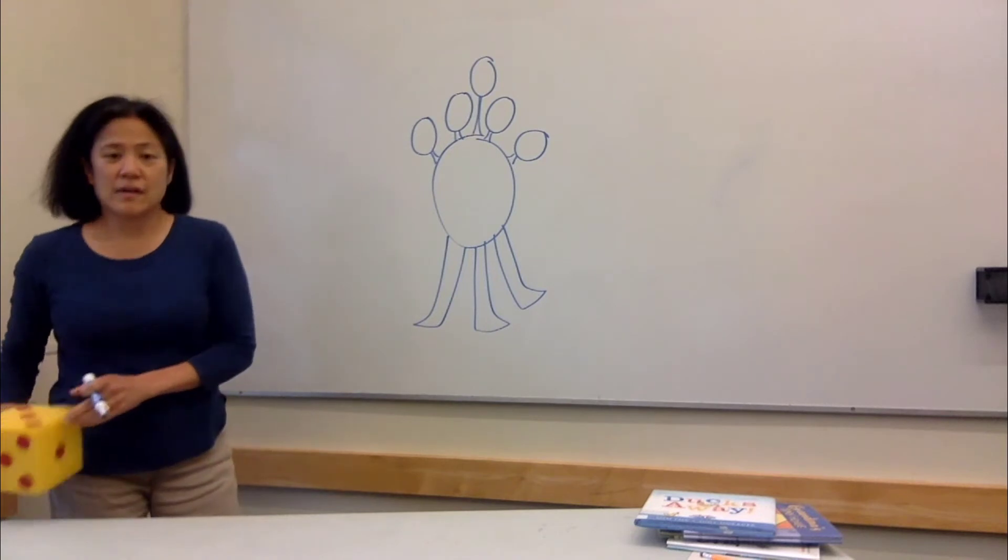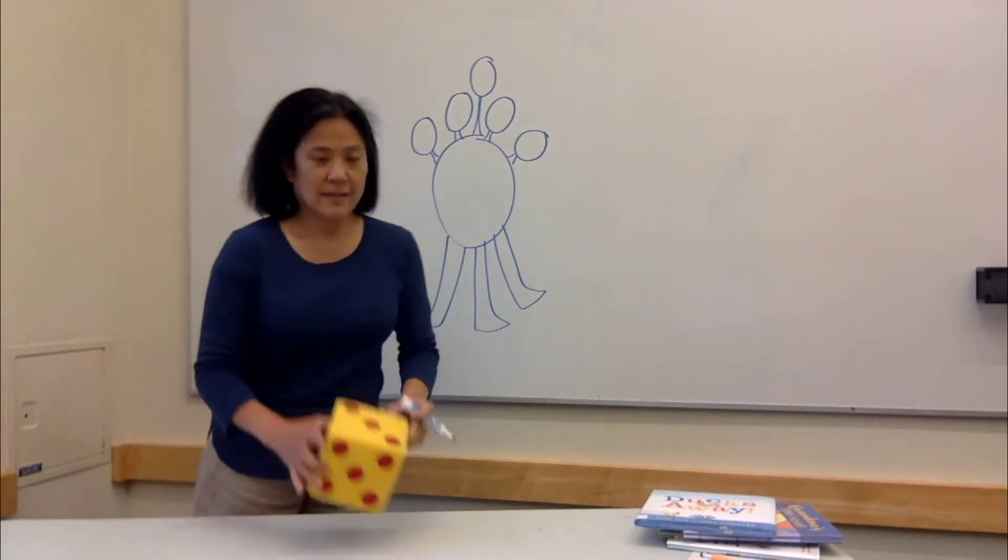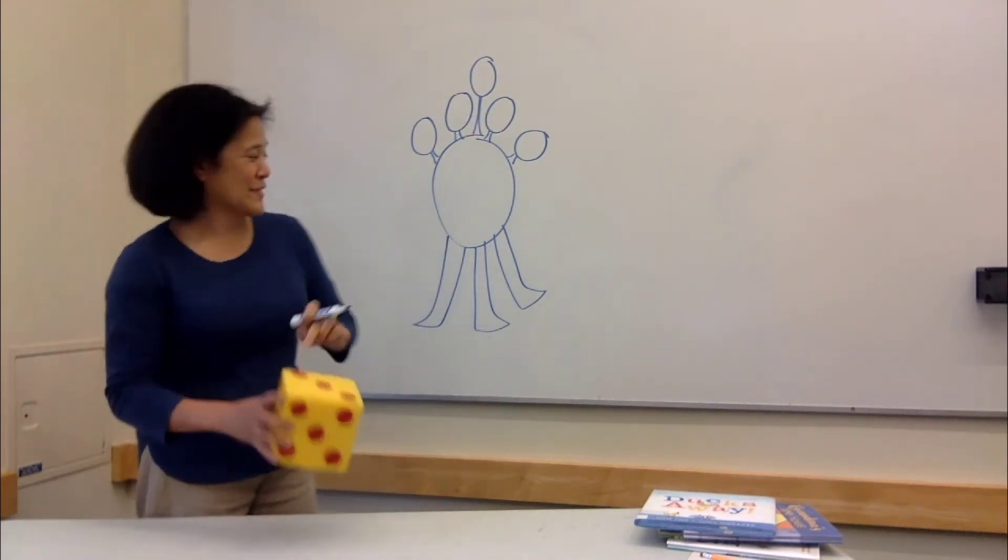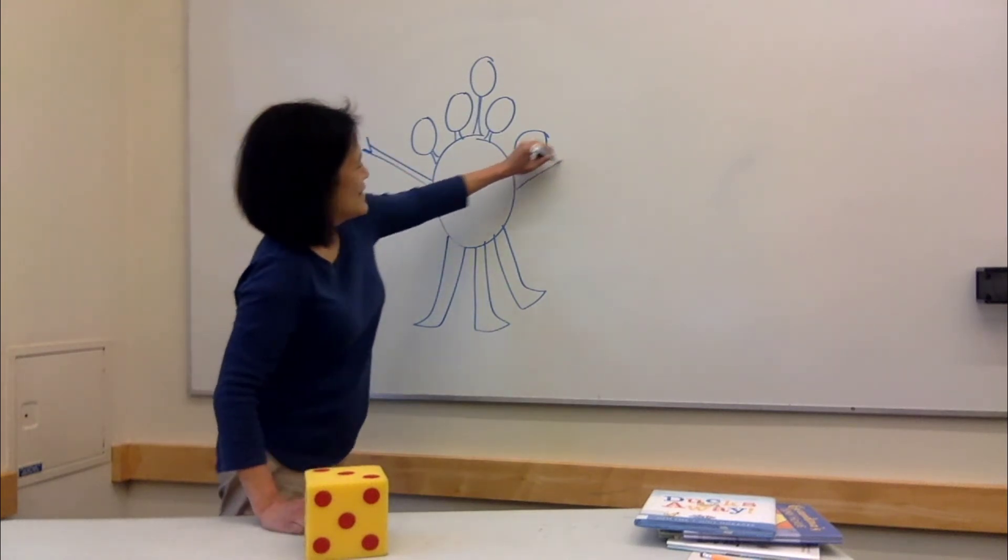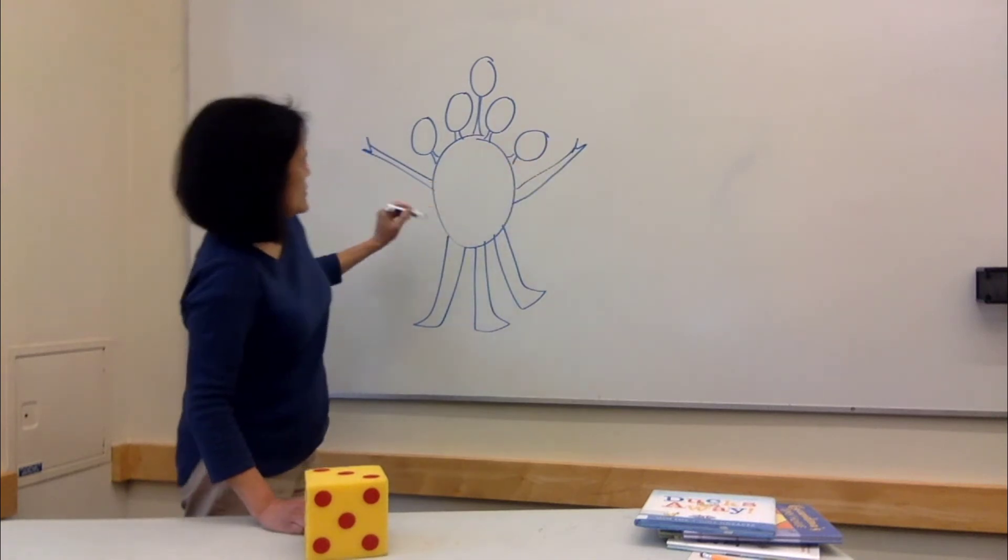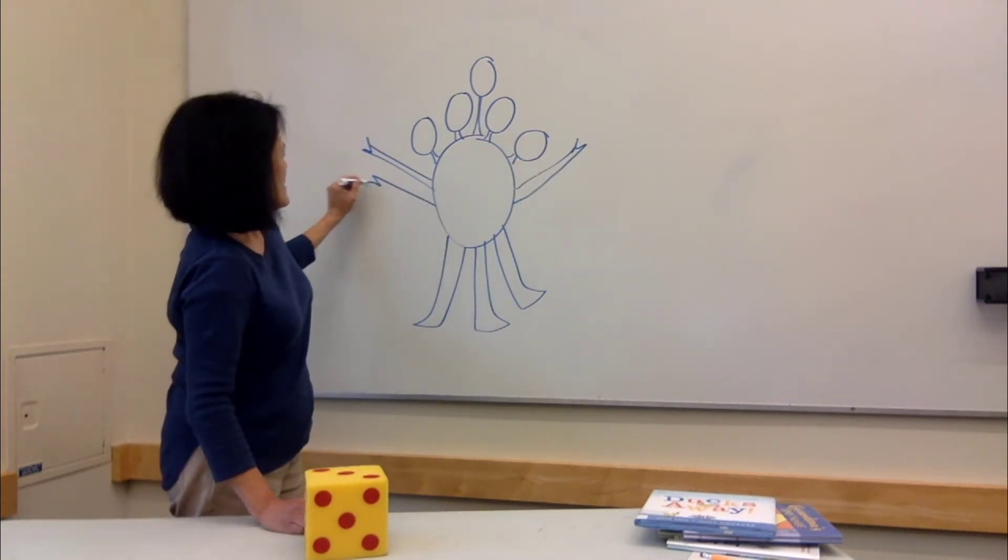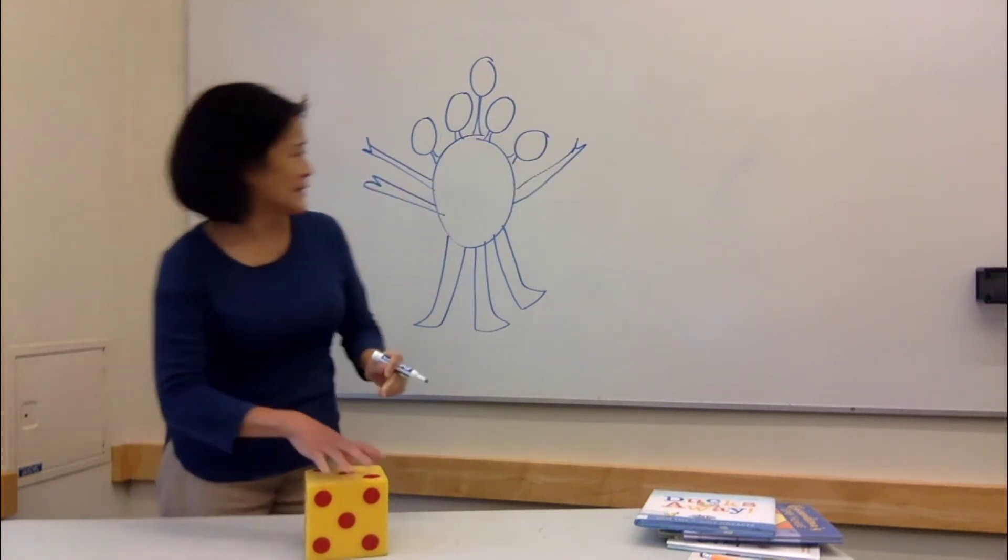And let's do arms. Three arms. One, two, three. One for each leg. Here's one arm. There's two arms. And here is three.